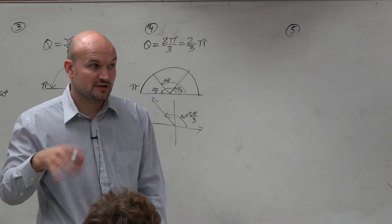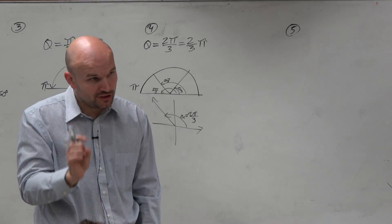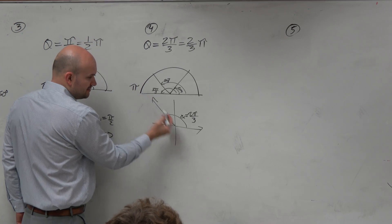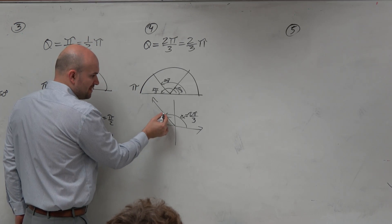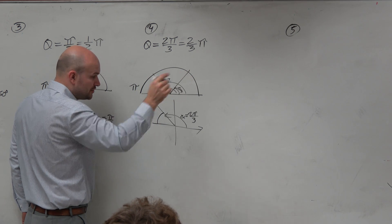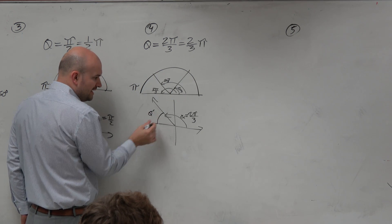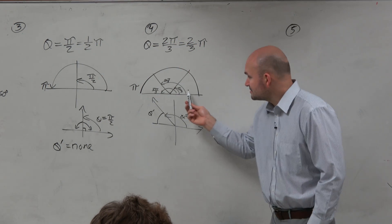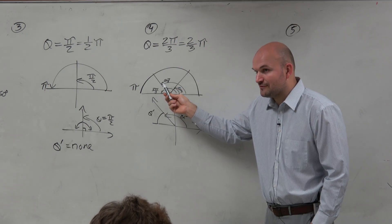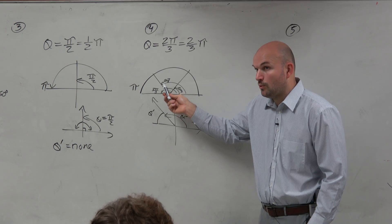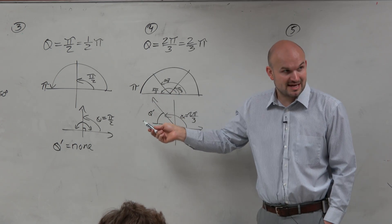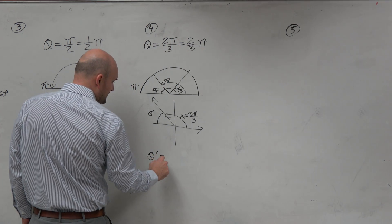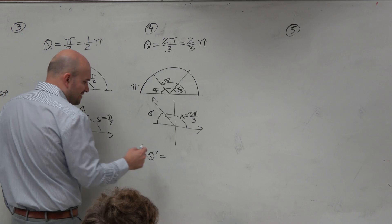Now let's talk about the reference angle. The reference angle is the positive acute angle between the terminal side and the x-axis. Here's the terminal side, here's the x-axis. We're basically asking ourselves — what I wrote in green — how far away is the terminal side from the x-axis. Think about it: we went two parts out of three, so we would only have to go one more third to get to the x-axis. So the reference angle is π over 3.